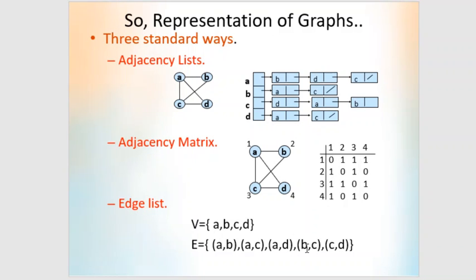These are the three standard ways in which we can represent graphs: adjacency lists, adjacency matrices, and edge lists. In this video, we have discussed some basic terms related to graph data structure and the three standard ways of representing graphs. Thank you.